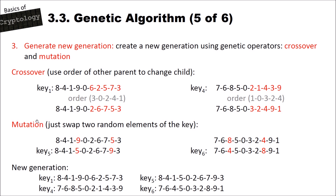Then we have mutation. Like in real genetics, sometimes genes randomly change. We do the same here by swapping two random elements of the key — for instance, swapping the nine and five, or the eight and four. Our new generation after this step keeps key K1 and key K4 from the last generation, plus our newly created keys K5 and K6.